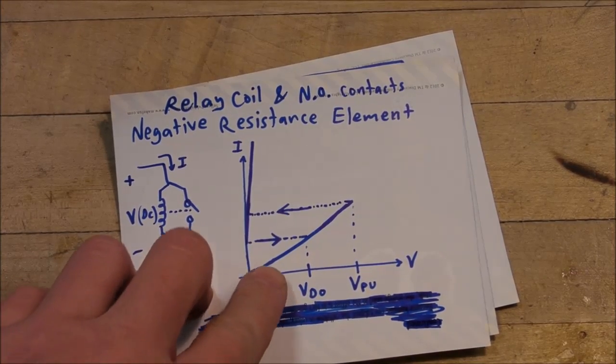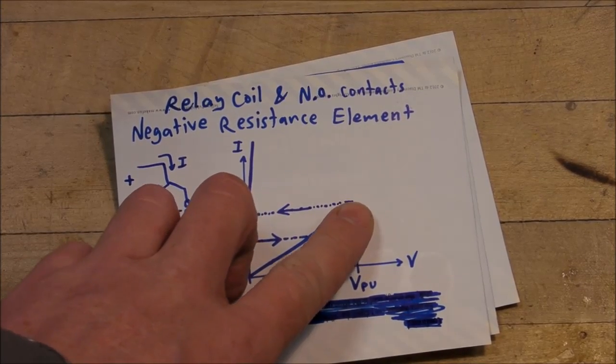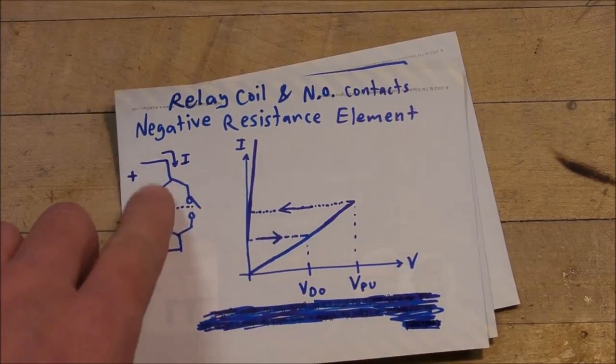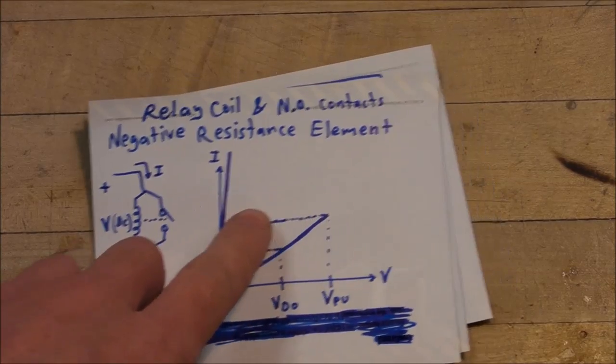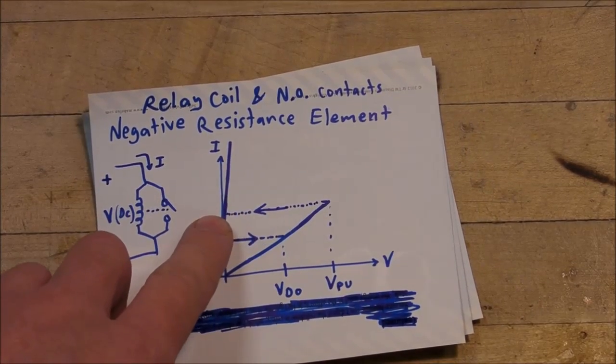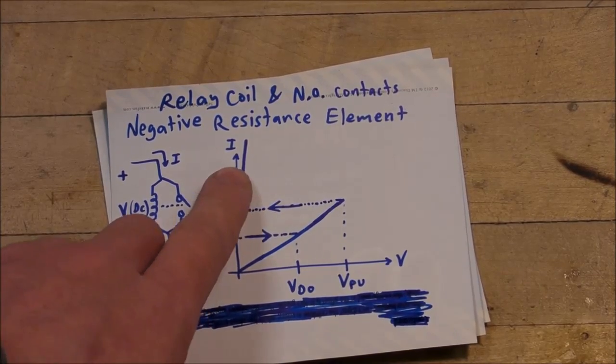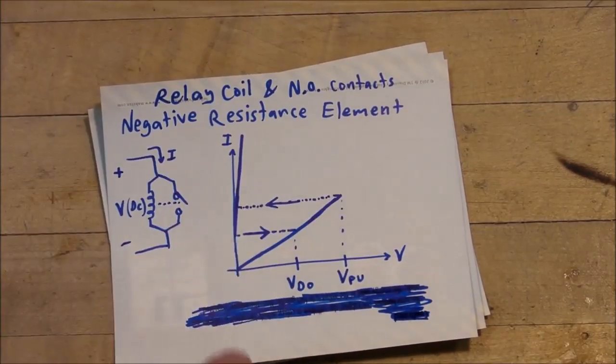Because as you increase the voltage, eventually it gets to the point where the coil turns on at the pickup voltage. And then the resistance from here to here will drop extremely to a low value. And if there is no other current limiting, then the current would shoot up very, very high.